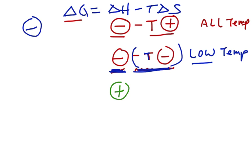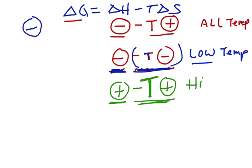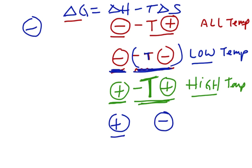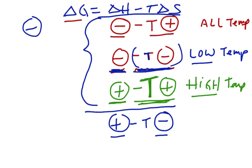If both delta H and delta S are positive: minus times a positive delta S gives a negative term that makes delta G negative, but the positive delta H works against me. So I want a large temperature to make the entropy term more important, and I can get a negative delta G at high temperatures — plus-plus is spontaneous at high temperatures. In the last case, positive delta H and negative delta S: there's no temperature I can choose that will make delta G negative. So delta G can be negative in three cases: negative H and positive S at all temperatures; negative-negative at low temperatures; positive-positive at high temperatures.